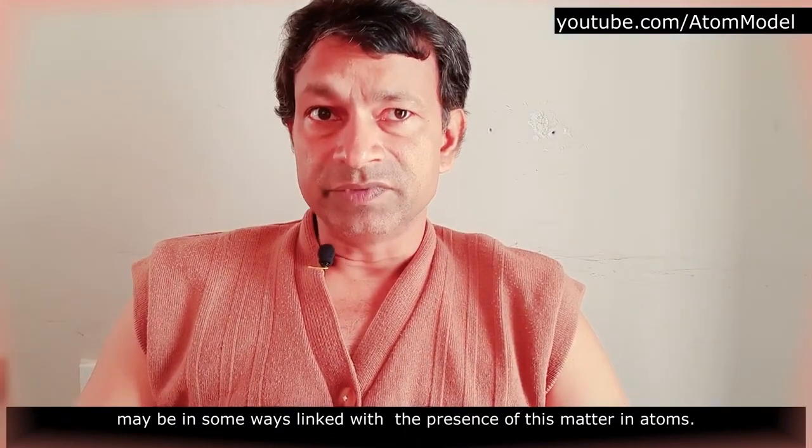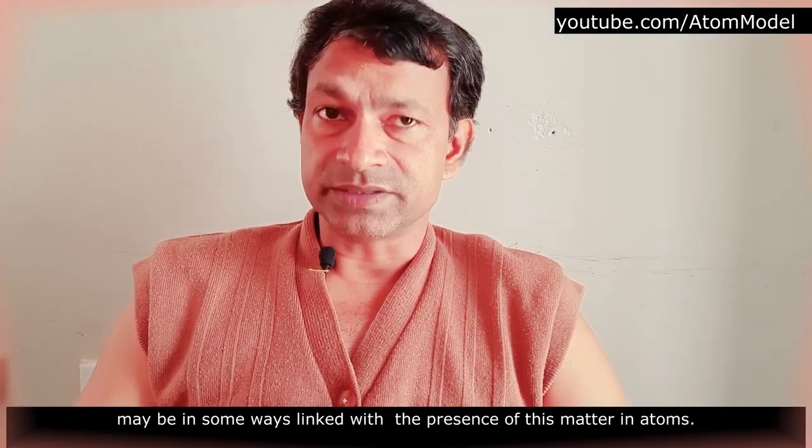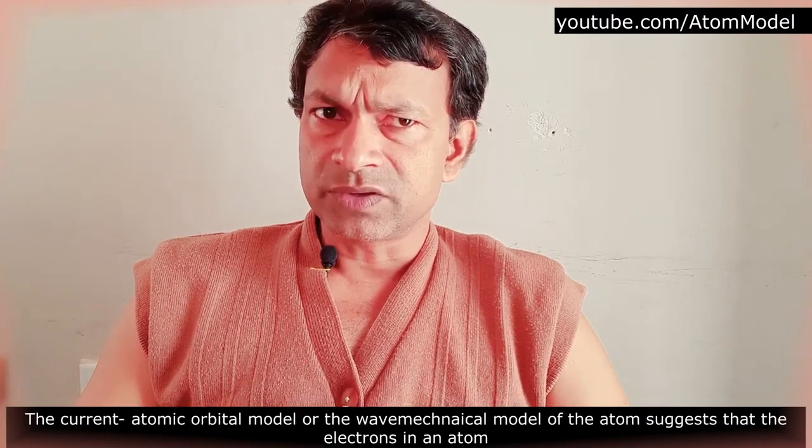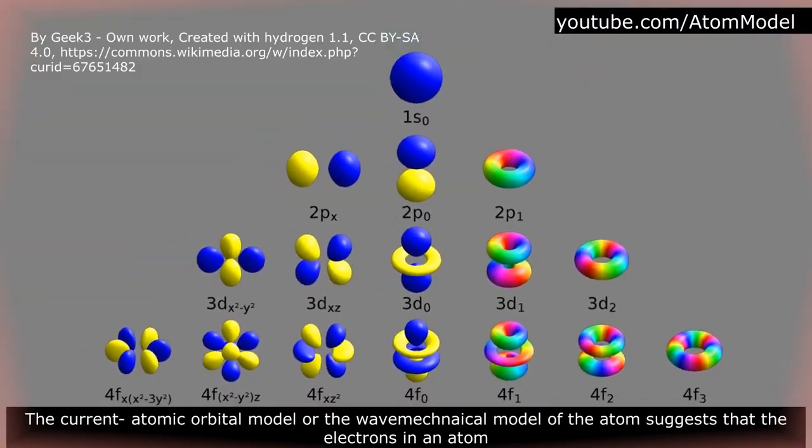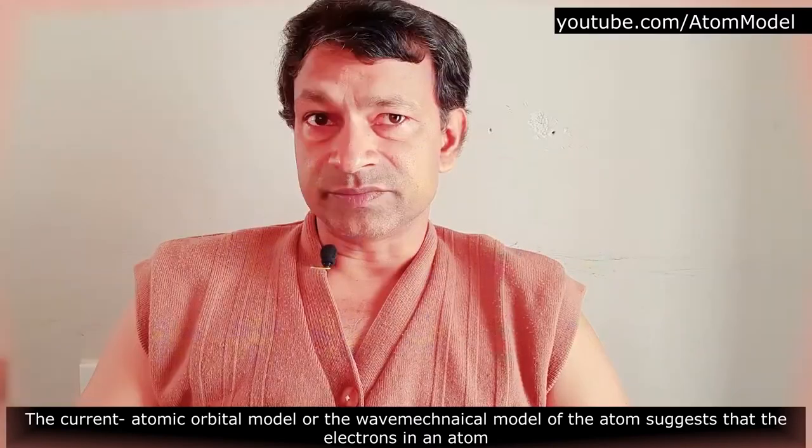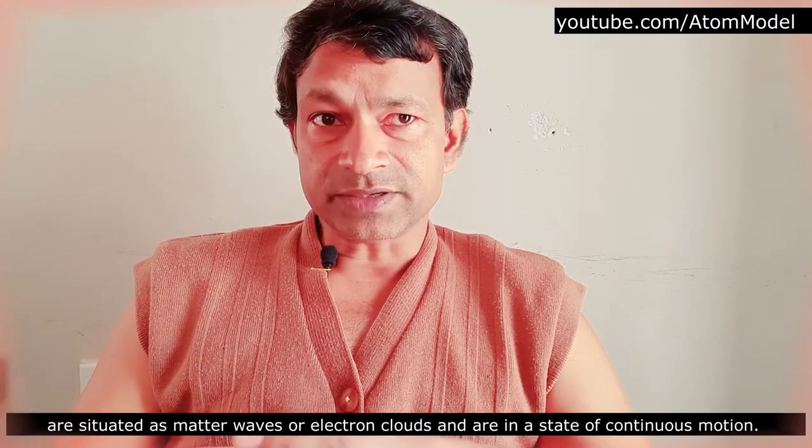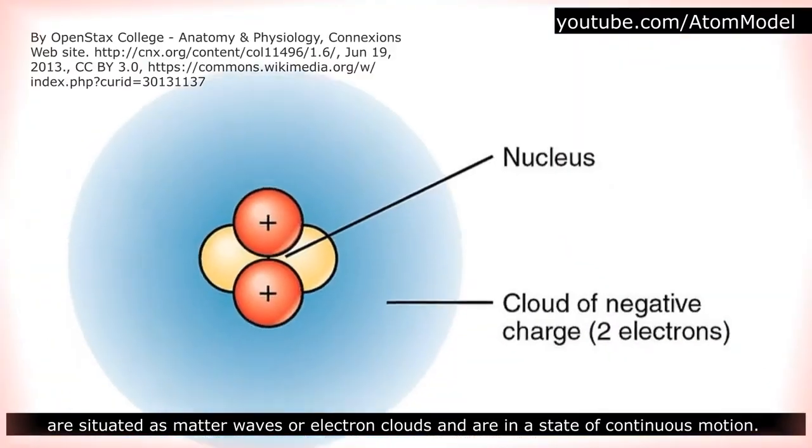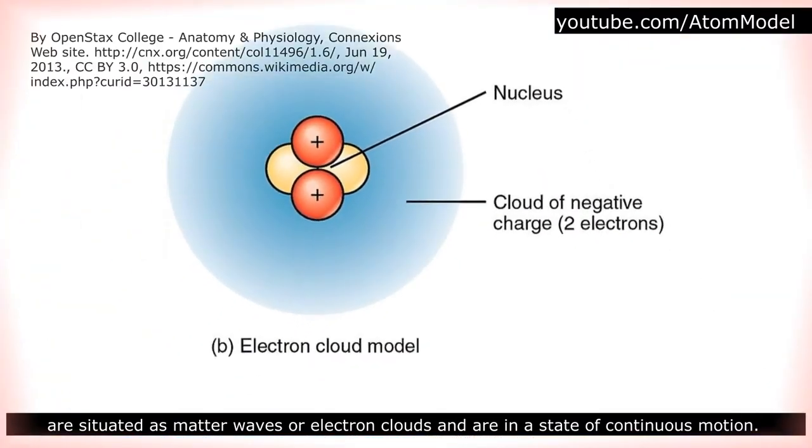The current atomic orbital model or the wave-mechanical model of the atom suggests that the electrons in an atom are situated as matter waves or electron clouds and are in a state of continuous motion.